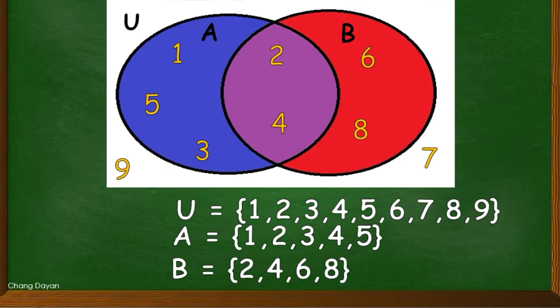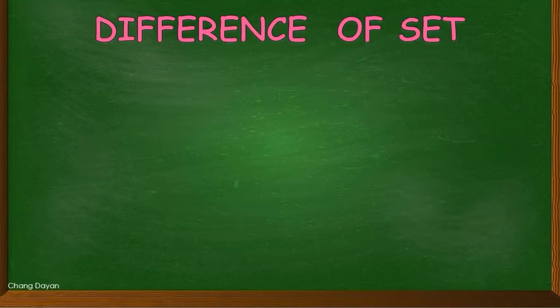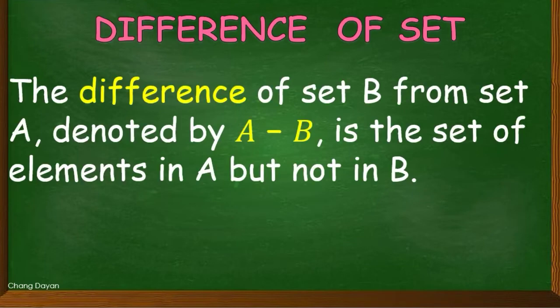Now let us define the difference of a set. The difference of set B from set A, denoted by A minus B, is the set of elements in A but not in B.